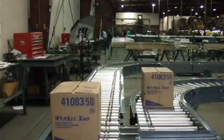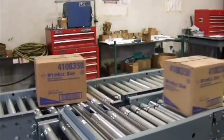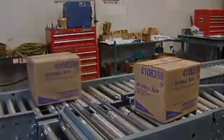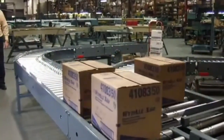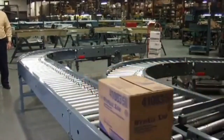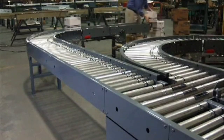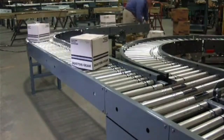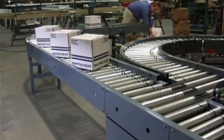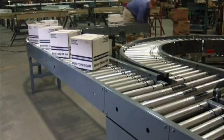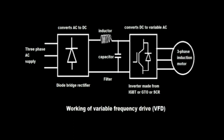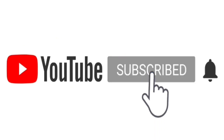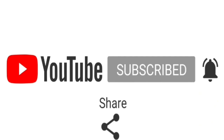These components convert the DC into variable AC, and we provide this variable AC supply to the motor. We can control the frequency in the inverting section — increasing or decreasing the frequency level — to control the speed of the motor. Frequency is the main factor we control to change motor speed. I hope you understand this topic about VFD and how it operates.